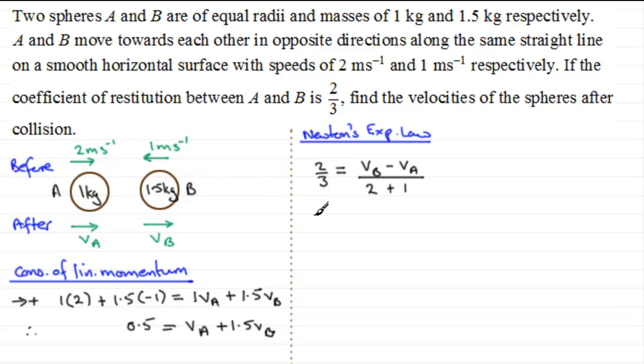So cleaning this up, we've got 3 here, we've got 3 here. So if I was to multiply both sides by 3, we'd just be left with 2 equals V_B minus V_A.